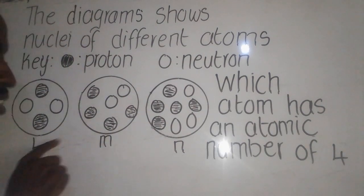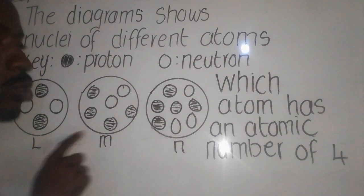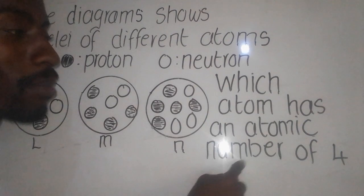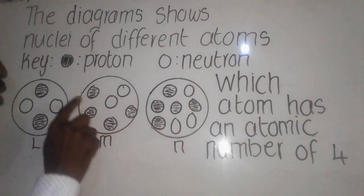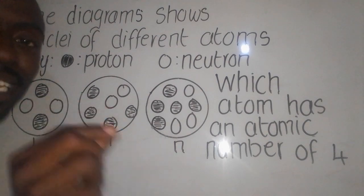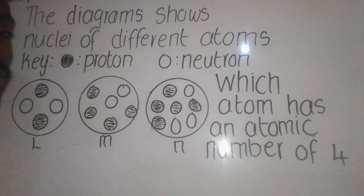They're saying among these diagrams, which one has an atomic number or a proton number of four. So we need to count the number of protons which are found in each nucleus.